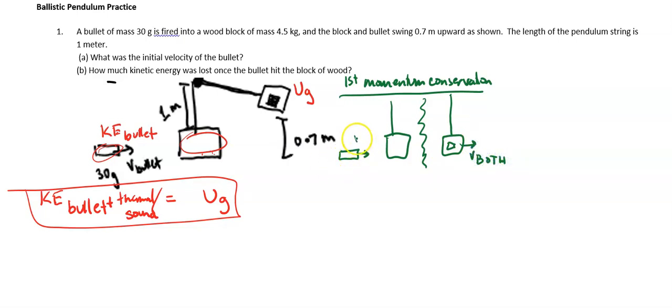So I'll go ahead and label that. This is the velocity of the bullet. This is the block, which is 4.5 kg. The bullet has a mass of 30 grams, which is divided by 1,000, so 0.03 kilograms. The block is initially at rest. Awesome.